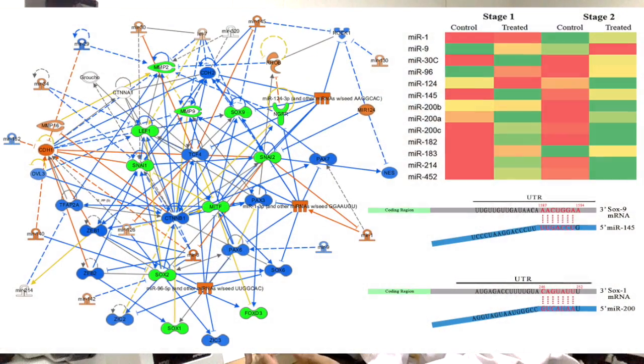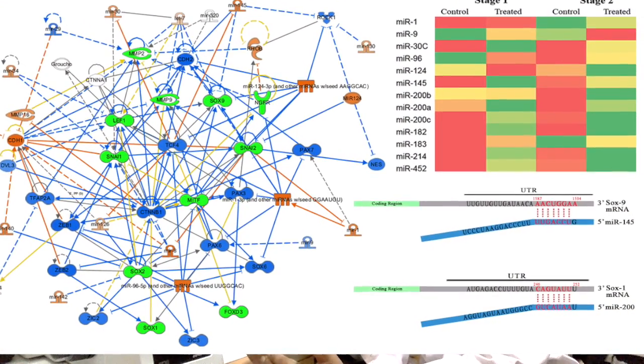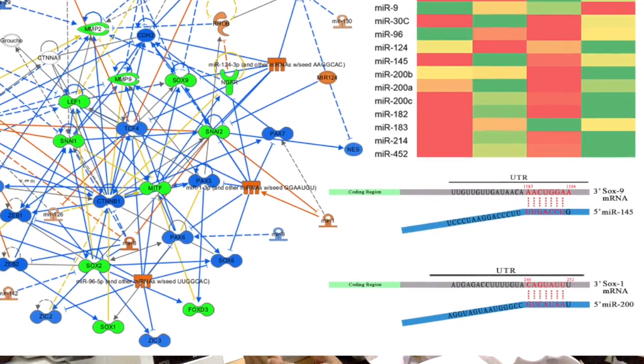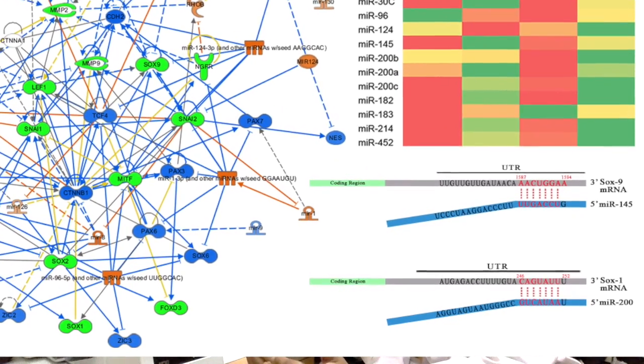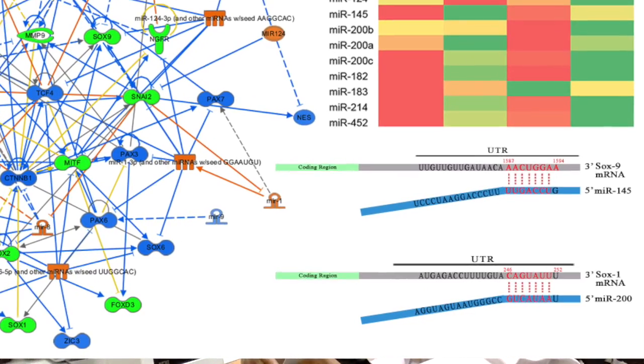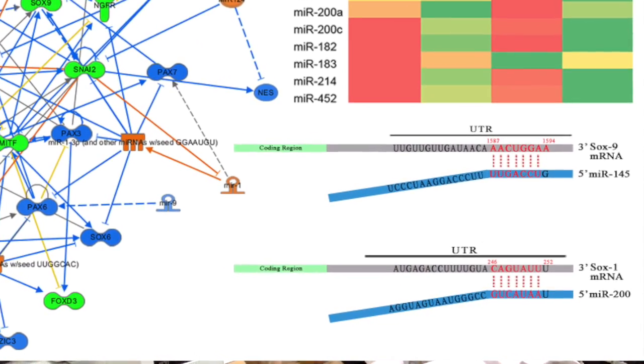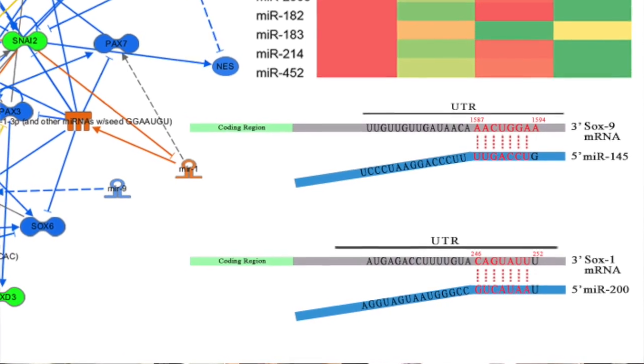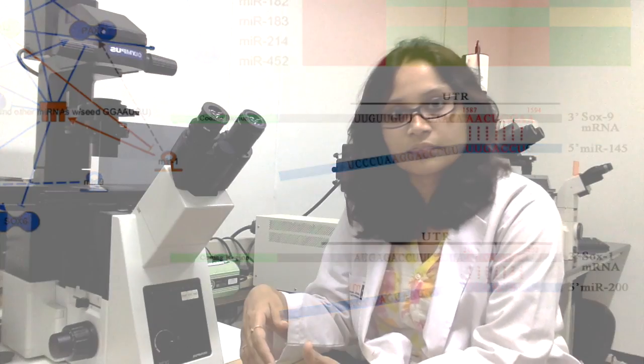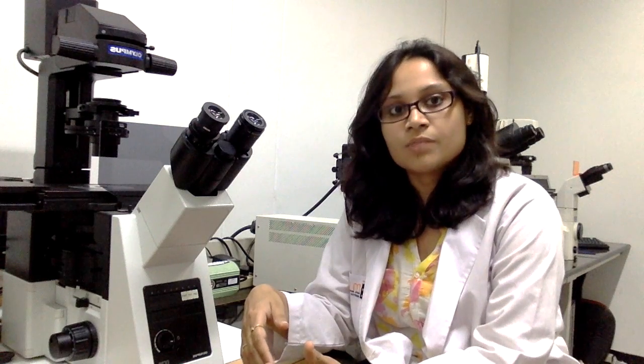Moreover, incomplete rescue of NCC determinants using exogenous recombinant WNT3A helped us reason that perhaps a parallel mechanism besides the WNT cascade is active in driving this phenomenon. We therefore took advantage of bioinformatics tools like Ingenuity Pathway Analysis, TargetScan, and Miranda for screening NC-specific target genes and identified the putative role of a candidate set of miRNAs. Further studies involving loss- and gain-of-function confirmed that NCC specifiers SOX1 and SOX9 are direct targets of MIR200 and MIR145 respectively, and that they are essentially modulated by metformin.